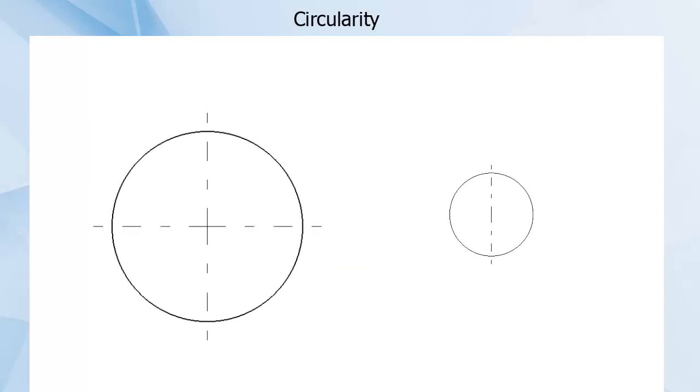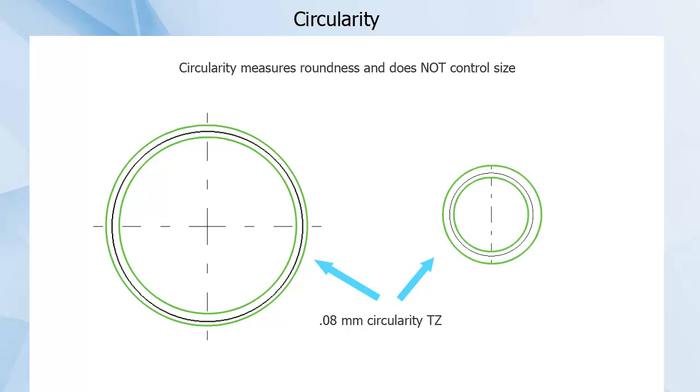However, there are two important limitations of circularity as a control. The first is that circularity measures how round something is, not what size it is. If a feature, like a pin, needs to be round to 0.08 mm, it can pass inspection at almost any size.